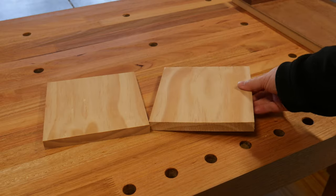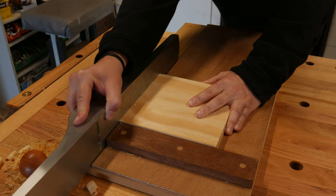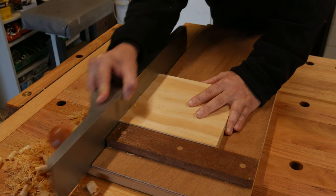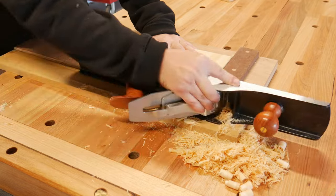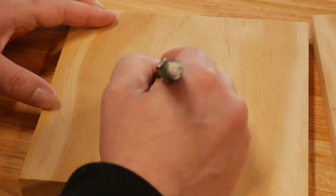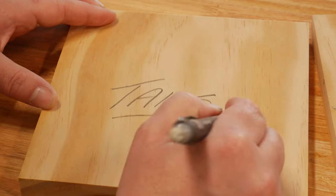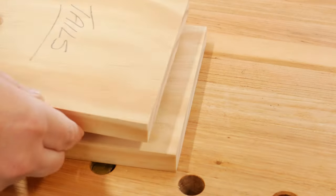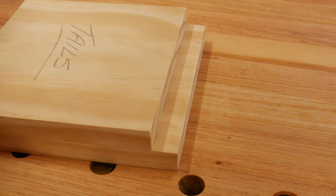To practice I've been grabbing any old scrap and squaring it up at the shooting board. Getting your edges square and true is a fundamental basic. I clearly mark out my tail and pin board because I definitely get confused at times, then place one board on top of the other.